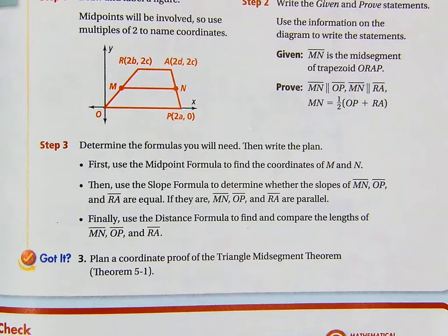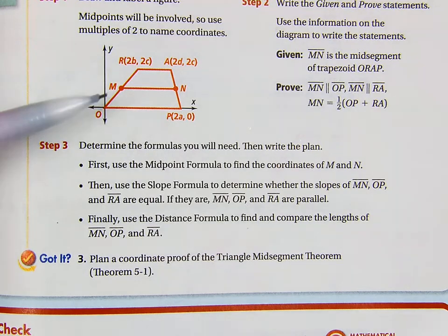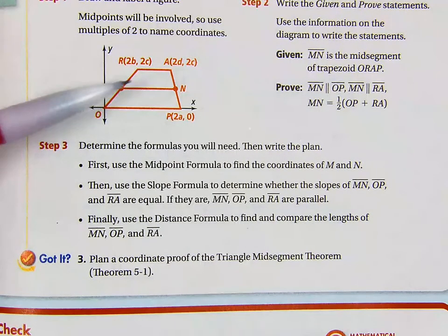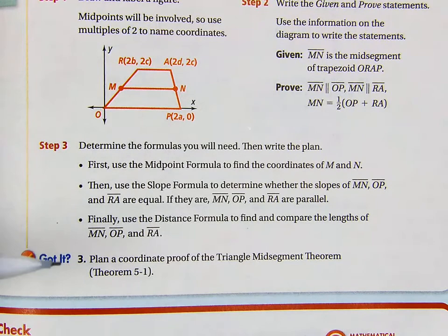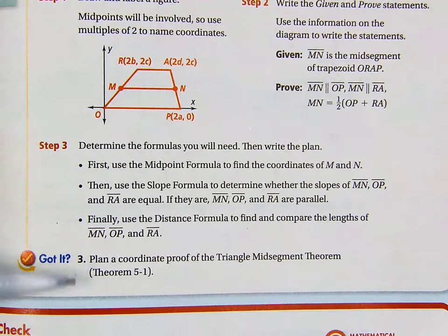Now I'm going to do the problem at the bottom: plan a coordinate proof for the triangle midsegment theorem. The triangle midsegment is a segment that joins the midpoints of two sides of a triangle — similar to the trapezoid midsegment that joined the midpoints of the two legs. If it's a midsegment of a triangle, it's parallel to the third side and half its measure.